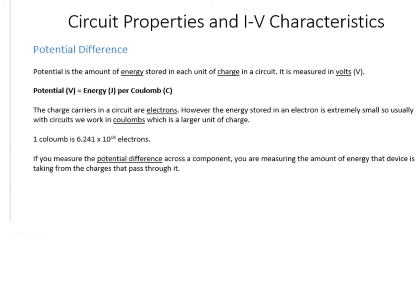Potential difference is the amount of energy that a device has taken from each charge that passed through it. You measure the potential at the start - the charge has a certain amount of energy - then you measure the potential after the component, and the difference between those values tells you how much energy the device has used.